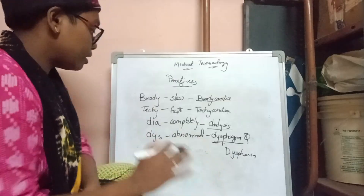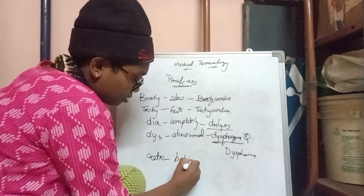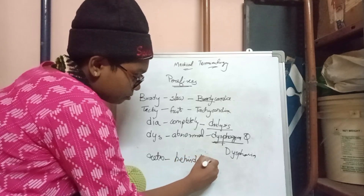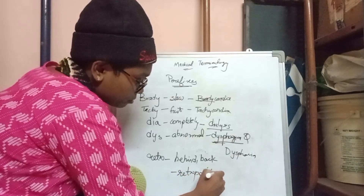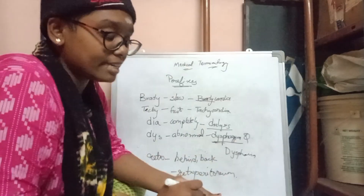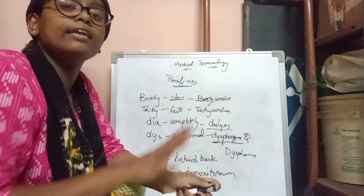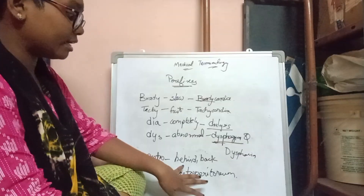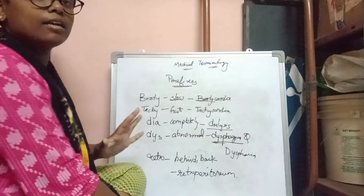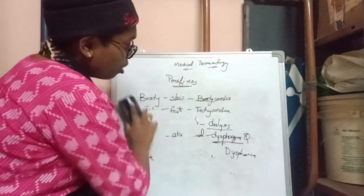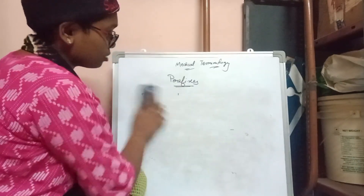The prefix 'retro' means behind or back. For example, 'retroperitoneum' — the kidneys are located in the retroperitoneal region, meaning they are positioned behind the peritoneum. So retro means behind or back, and the kidneys are located in that position or region.